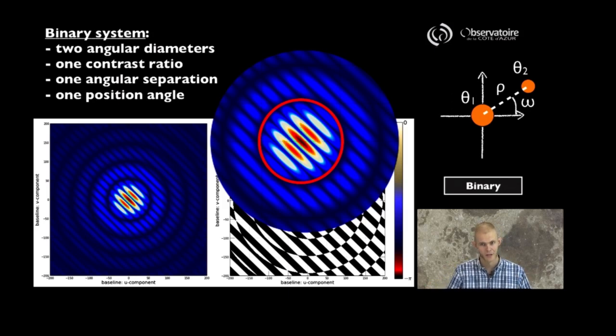But on top of that, what we see is we have this additional modulation of the function. And that modulation is characteristic of the presence of a binary companion. The further away the two components are going to be, the faster that modulation is going to be because we are resolving more and more the separation between the two objects. And so we actually observe more and more modulations.